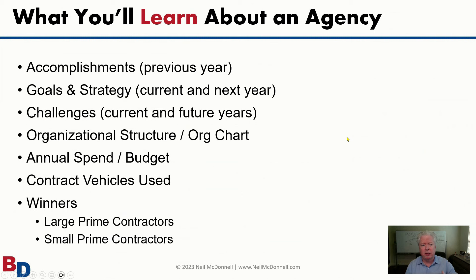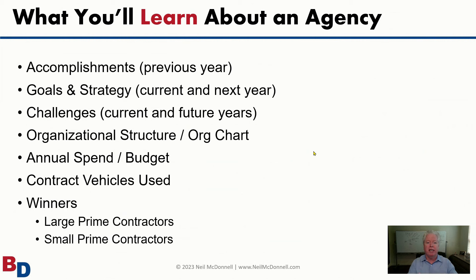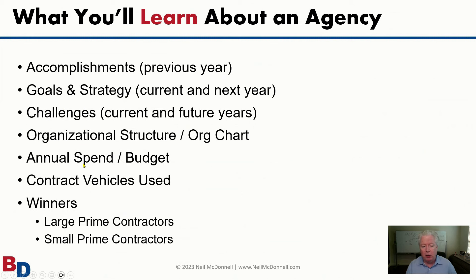Here are some of the things you want to be tracking: annual reports laying out accomplishments from last year, goals and strategies, and organizational structure. When you're doing business development and understanding an agency, understand how it's organized. For the Navy, major system commands include NAVFAC, NAVWAR, NAVSUP, and NAVAR — understand the mission of each and where you fit. I also talk a lot about spending; I just published an article with top agency budgets that you can explore down to a lower level.